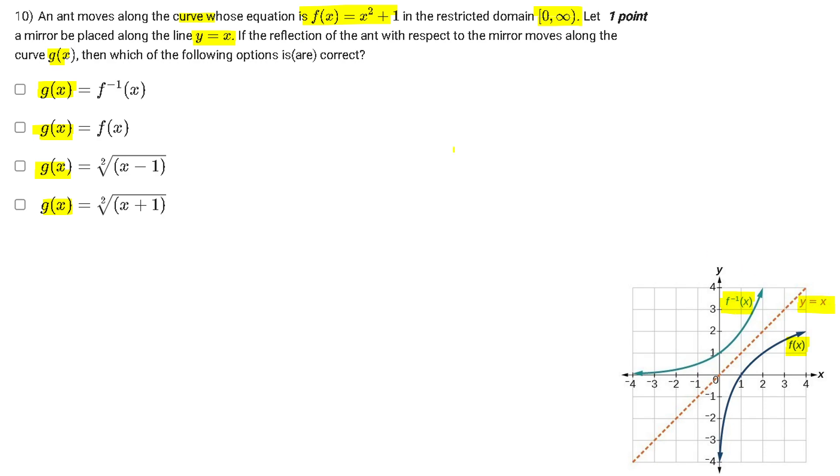Therefore, our mirror is the y = x line. The ant moves on the f(x) function, so the image of the ant will move on f^(-1)(x). Therefore, our option A will be correct because g(x) is the inverse of the function.